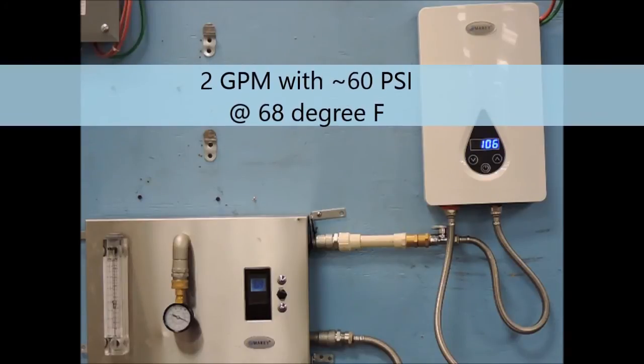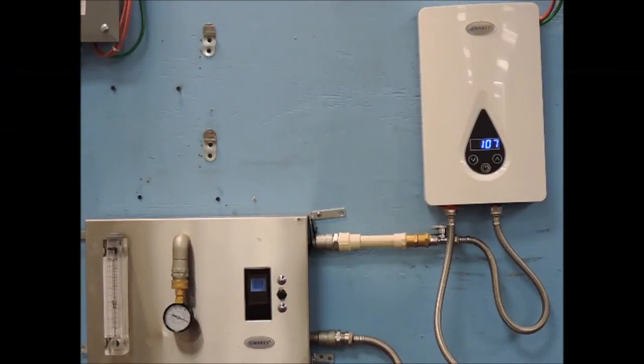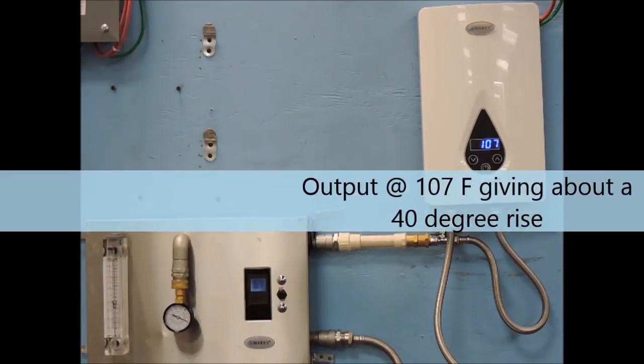On our second test, we have a flow rate of 2 gallons per minute, with 60 psi, and an incoming water temperature of around 69 degrees. As you can see with these inputs, we are receiving about 40 degrees rise in temperature.